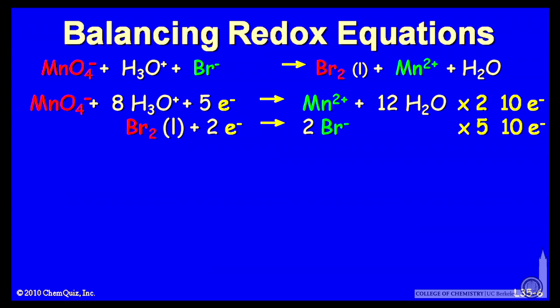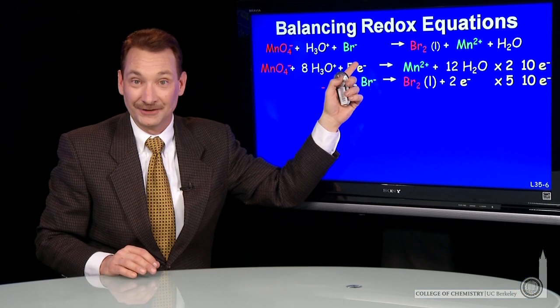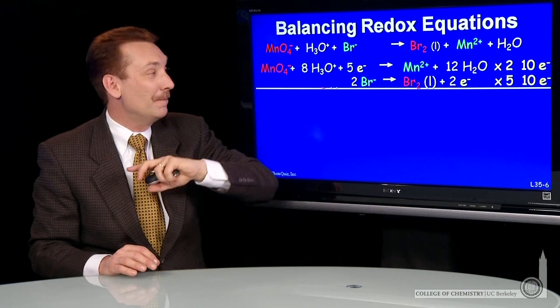Now, when I multiply through, I can reverse the bromine half cell so that I have one reduction and one oxidation. That is, the electrons cancel and then sum the reaction.